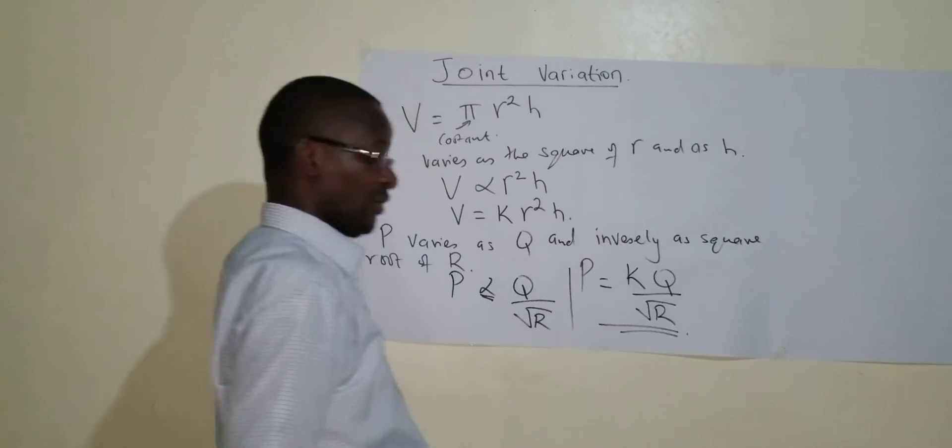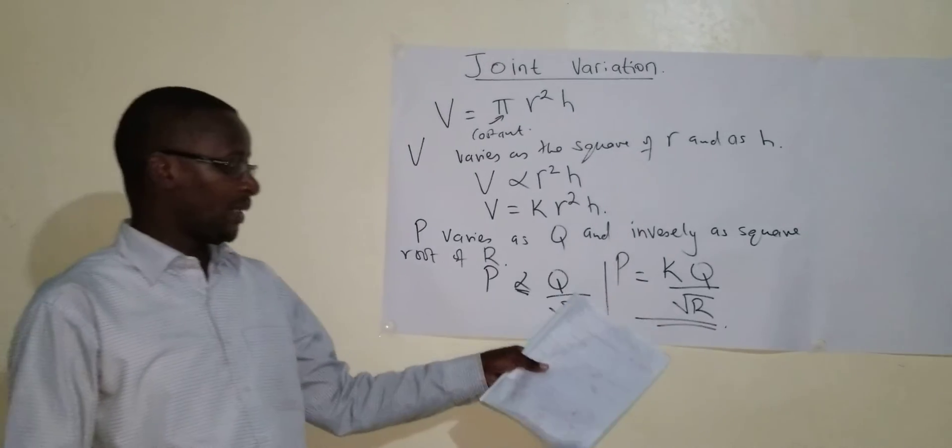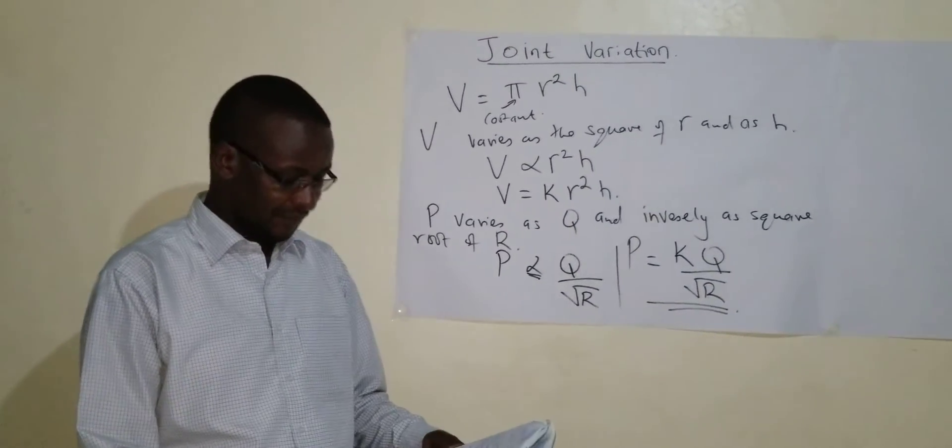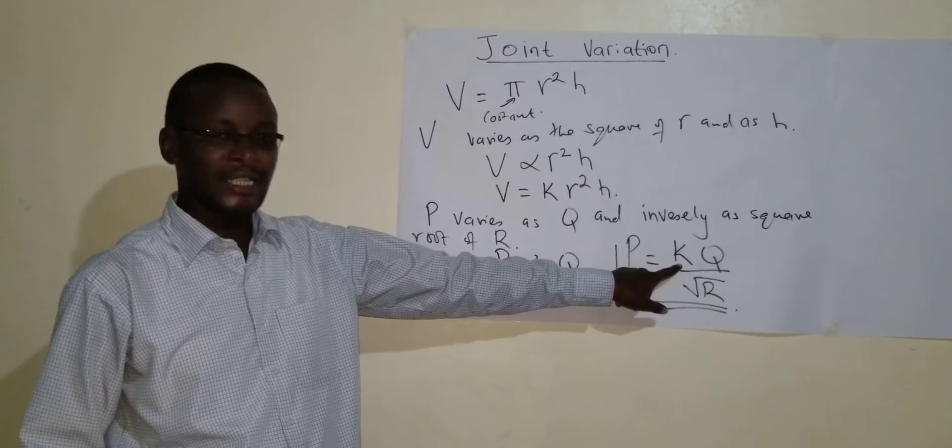you will have P is equal to K Q over the square root of R. That would be the equation.